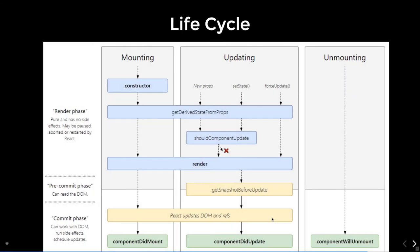So these are divided into three parts: initialization, mounting, updating, and unmounting. In the mounting phase we write a constructor to initialize state, then getDerivedStateFromProps — where if we receive props from the parent component and want to derive internal state from them we can do so — then render, and componentDidMount. componentDidMount happens after the rendering process, so if you want to make an XHR call, componentDidMount is a good candidate.